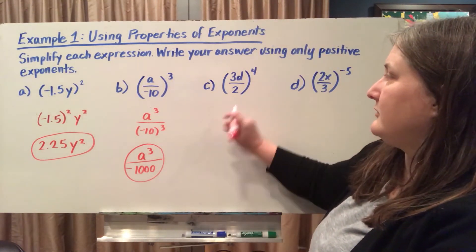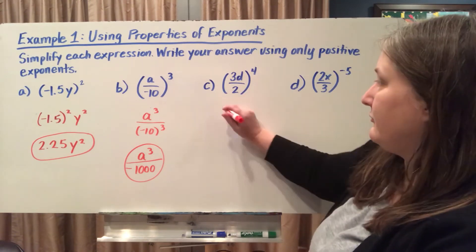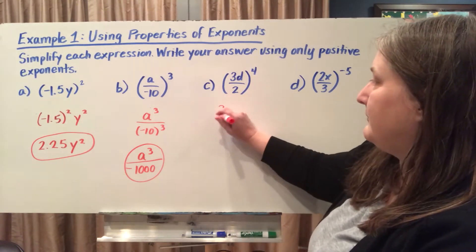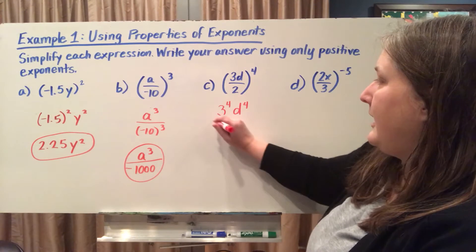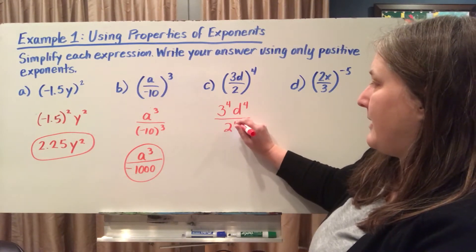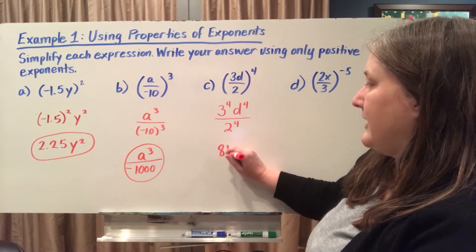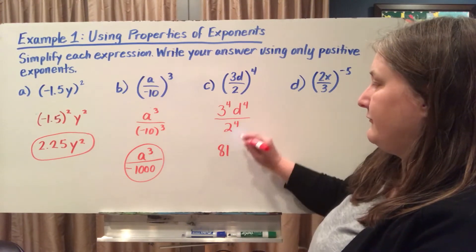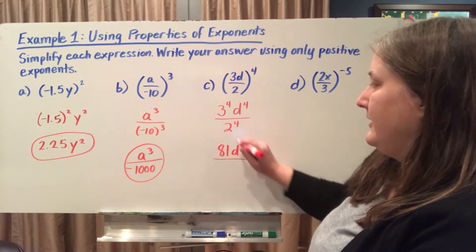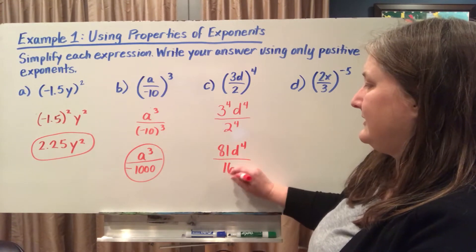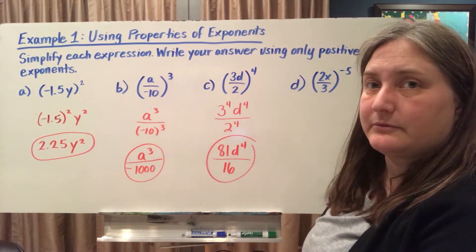In this case, I've got two factors in my numerator, so they're both going to be to the 4th power, and my denominator will be to the 4th power as well. 3 to the 4th power I can simplify — it's 81. d to the 4th power I cannot because I don't know the value of d. 2 to the 4th power is 16. So 81d⁴ over 16 is my simplified answer.